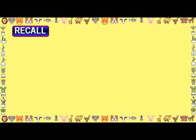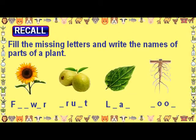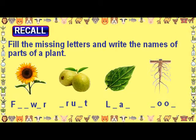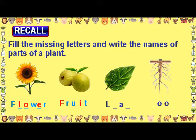Recall: Fill the missing letters and write the names of parts of a plant. The missing letters in 'flower' are L, O, and E. The missing letters in 'fruit' are F and I. The missing letters in 'leaf' are E and F. The missing letters in 'root' are R and T.